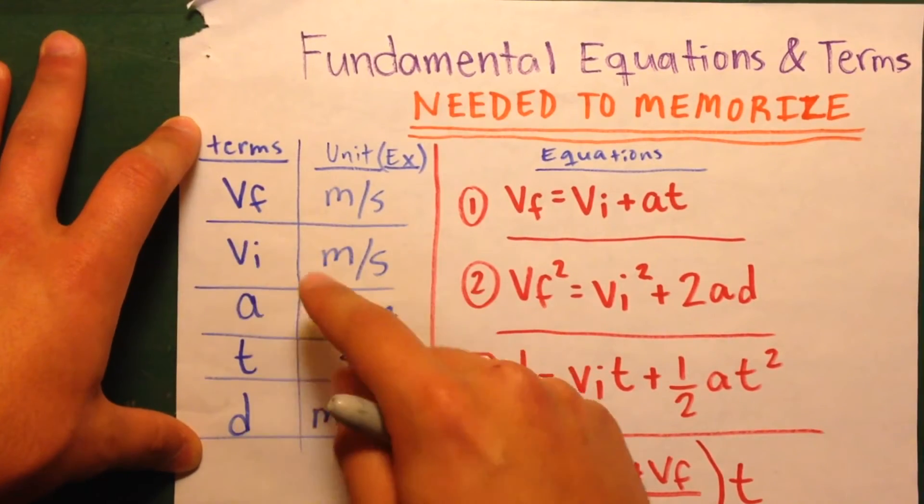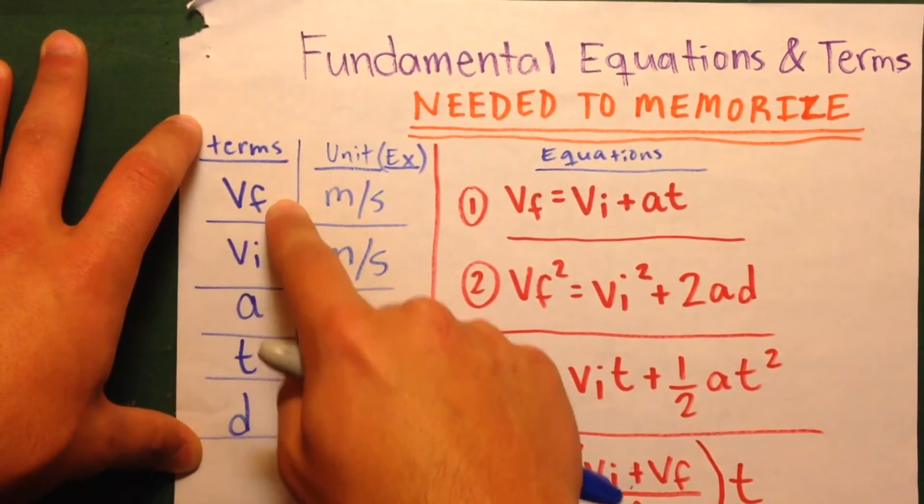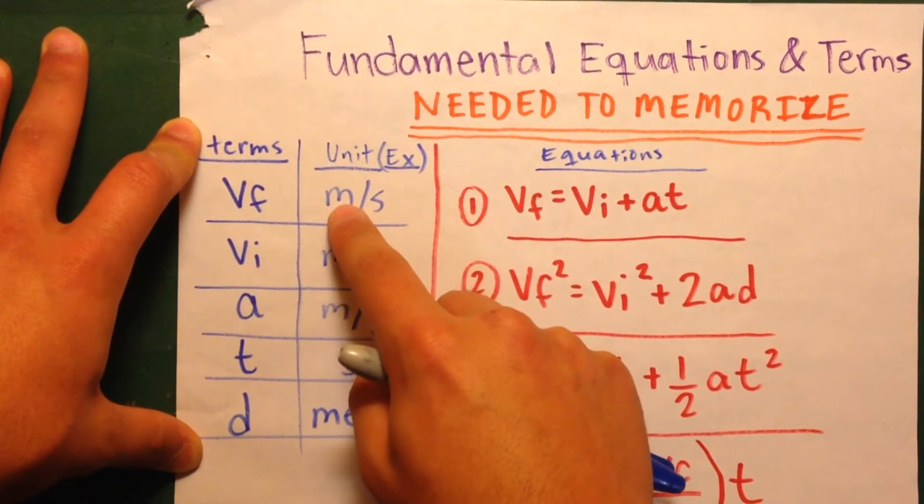VF means the final velocity, V, velocity, F for final. And an example for a unit would be meters per second.